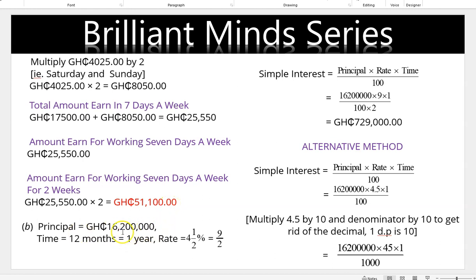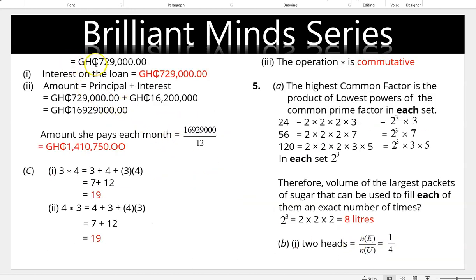For simple interest: the principal and time are given, and the rate is simplified to 9/2. Using the simple interest formula SI = PRT/100, substituting gives 729,000 Ghana cedis. An alternative method uses 4.5% — since there is a decimal point, multiply numerator and denominator by 10 to eliminate it, then simplify to get the same result of 729,000 Ghana cedis interest on the loan.